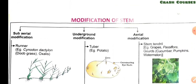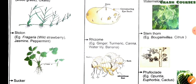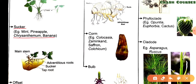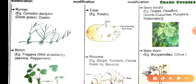Now let's quickly revise. The first type is runner — example doob grass. Second type is stolon — remember wild strawberry, jasmine, and peppermint. Third type is sucker — remember chrysanthemum, banana, mint, and pineapple. Fourth type is offset — examples are Pistia and Eichhornia; both are very important and have been asked many times in previous year exams.